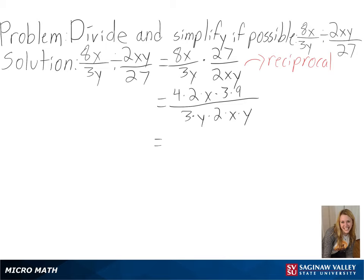Then we can simplify this, since 3 over 3 is equal to 1, and 2 over 2 is equal to 1, and x over x is equal to 1, and any number multiplied by 1 is itself.